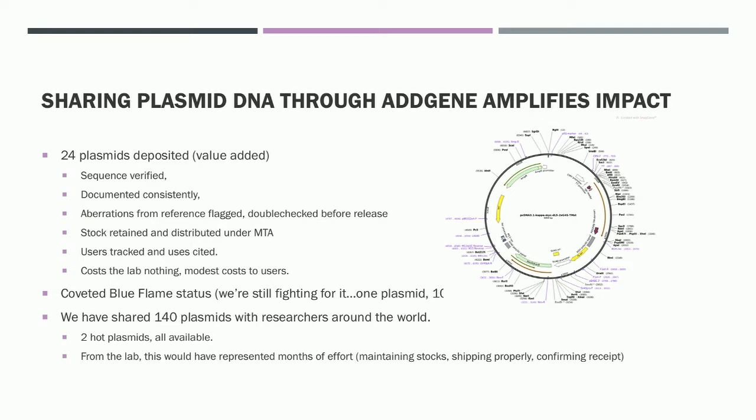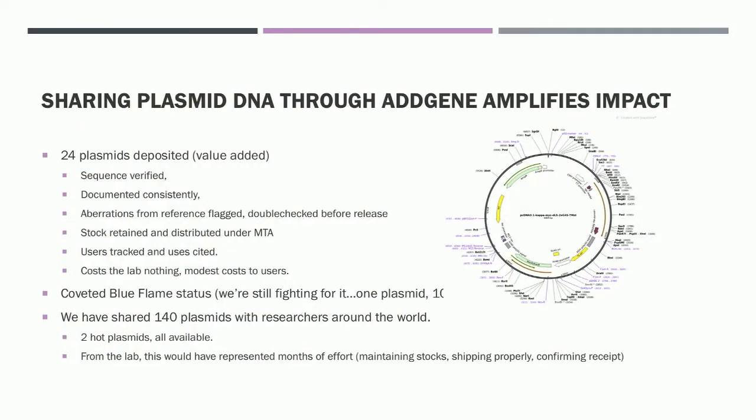That saves us a lot of effort. They track users, and to some extent uses are cited — when people use plasmids from Addgene, they get cited as 'Addgene plasmid number 78504.' So we can go and look for those to see who's using our tools and what they're doing with them. It costs the lab nothing — it's actually net profit to the lab. It doesn't give money back, but it doesn't tie up lab resources providing these things and troubleshooting the junk that you send out.